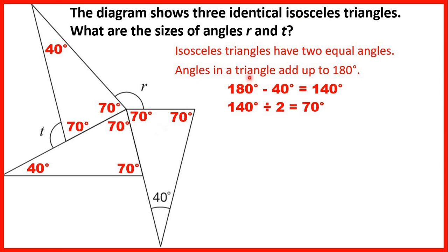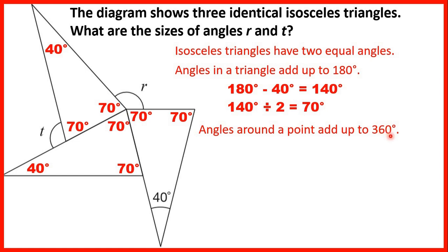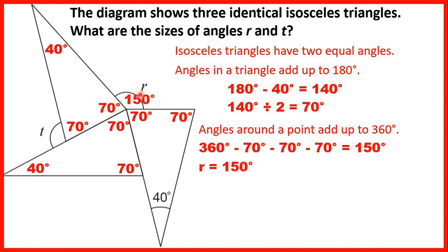Because our three triangles are identical, the corresponding angles in all three triangles are 70 degrees. We can find angle R by remembering that angles around a point add up to 360 degrees. We subtract 70, 70, and 70 — that's 210 — from 360, which gives us 150. So angle R is 150 degrees, because 70 plus 70 plus 70 is 210, and we need 150 more to make 360.